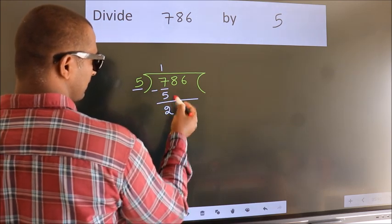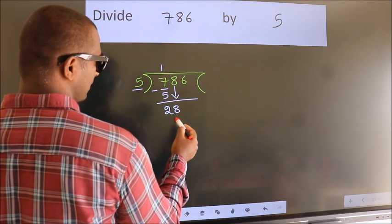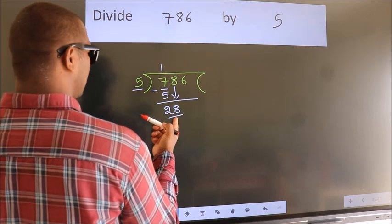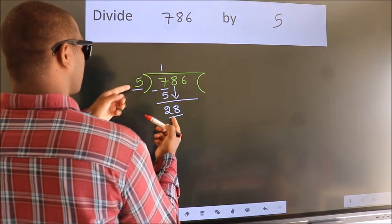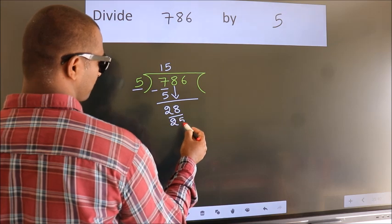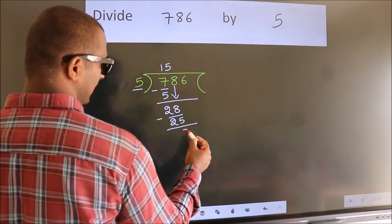After this, bring down the beside number. So 8 down, so 28. A number close to 28 in the 5 table is 5 times 5 equals 25. Now we should subtract. We get 3.